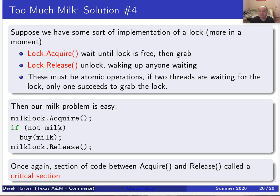The code between acquire and release is called a critical section. This sets us up for the next video, where we'll look at how to build these kinds of mechanisms. That's it for this video — see you in the next one.